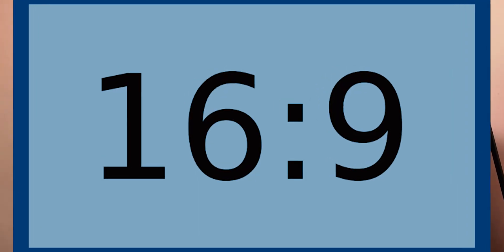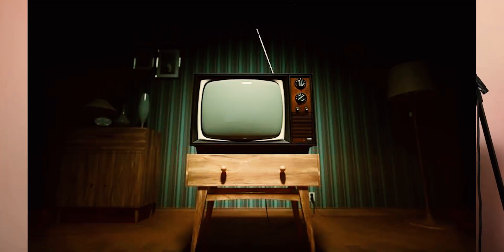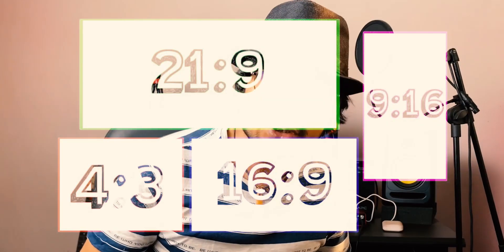Aspect ratio is the width and the height of an image. Now we use modern computers, and this display is 16 to 9 ratio. Old TVs are 4 to 3. Instagram is 1 to 1 square format. So these different formats are called aspect ratio, and we are going to discuss how to use different aspect ratios and which values to use when exporting videos.